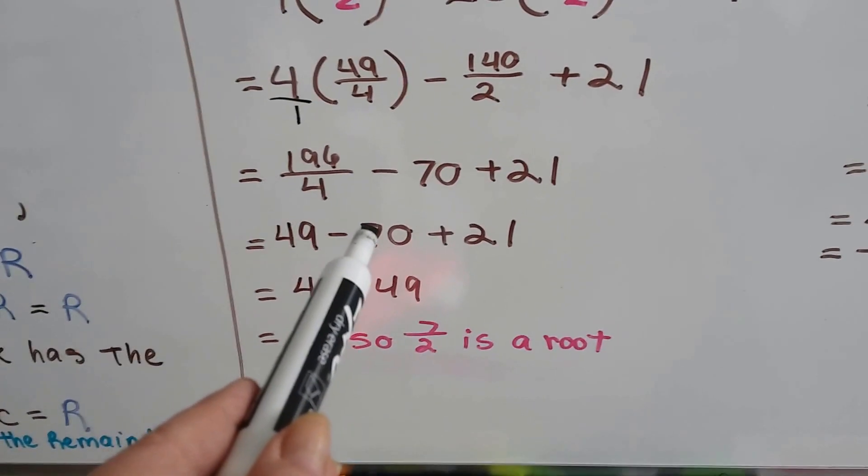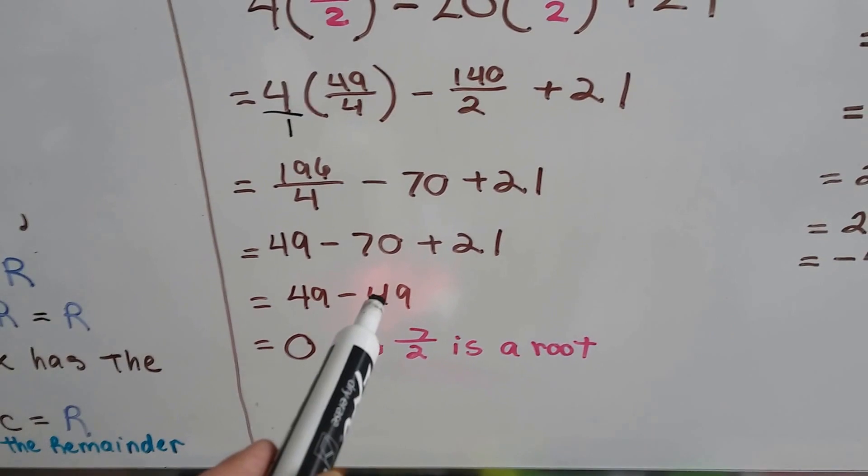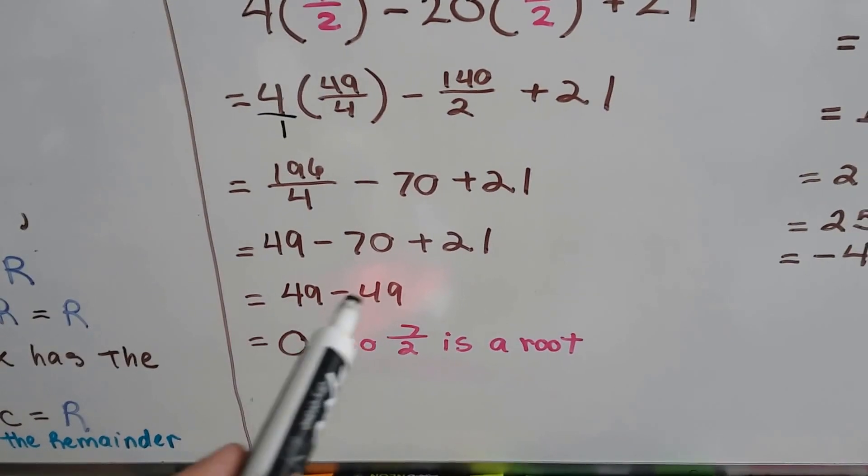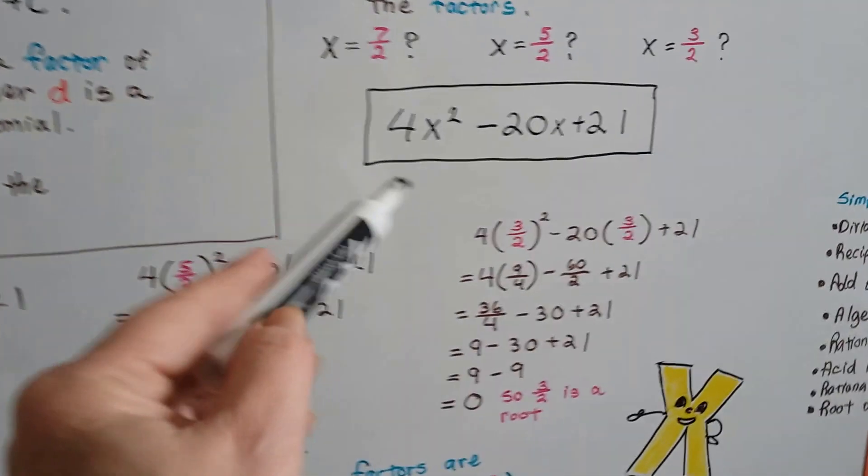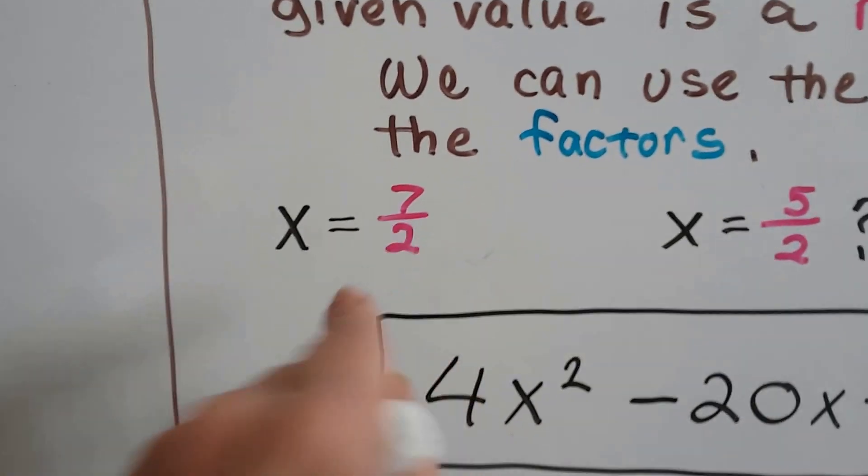So now we've got 49, which is 196 over 4 simplified. And we're going to take away 70 because 140 divided by 2 is 70. And we're going to add the 21. And negative 70 plus a 21 is negative 49. 49 take away 49 is 0. So yeah, 7 halves would be a root for that polynomial. So 7 halves did work.